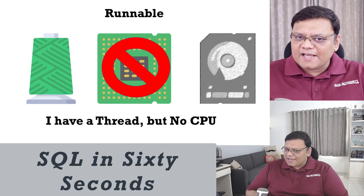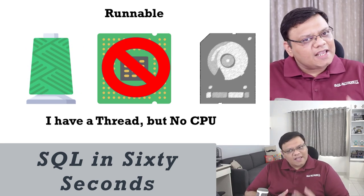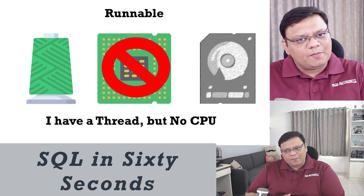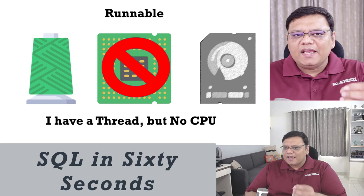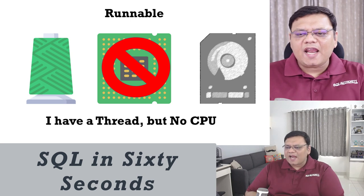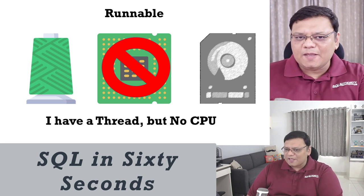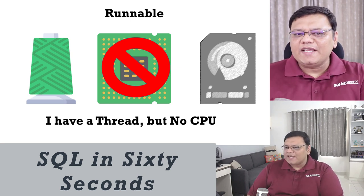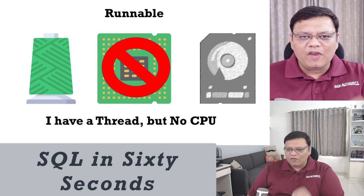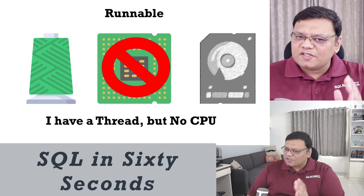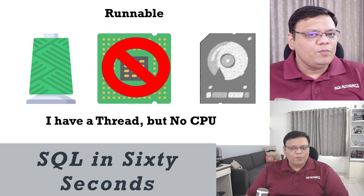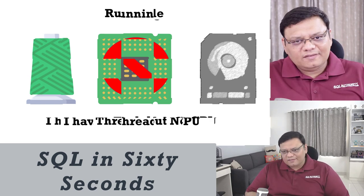The next one is runnable. In case of a runnable process, it has a thread but it does not have CPU, so it is essentially waiting for CPU to be available.